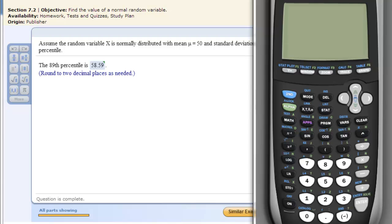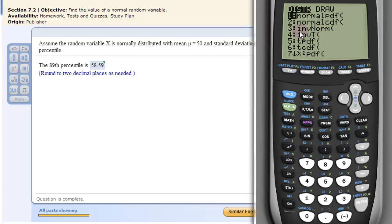To do that, we go to the calculator, turn it on, and go into 2nd VARs or distributions. Then we come down to inverse norm and click enter.